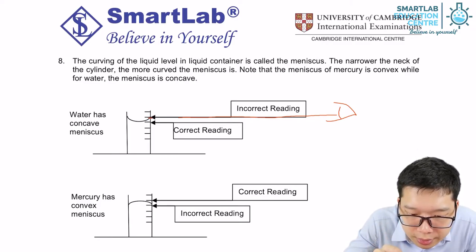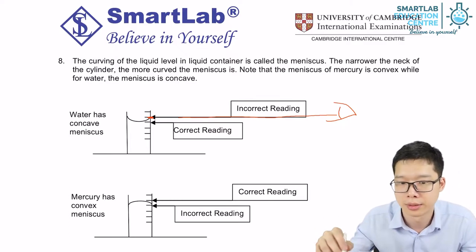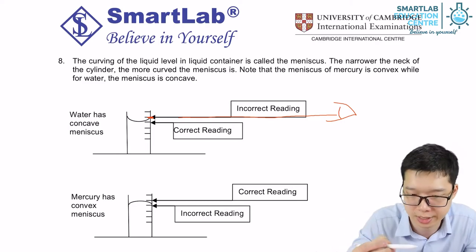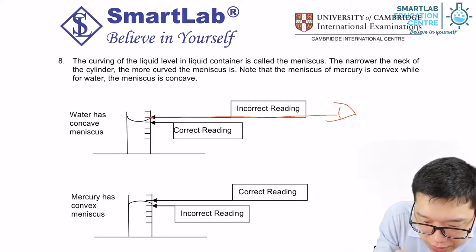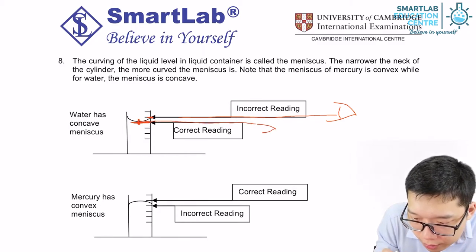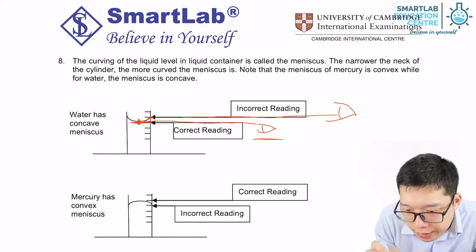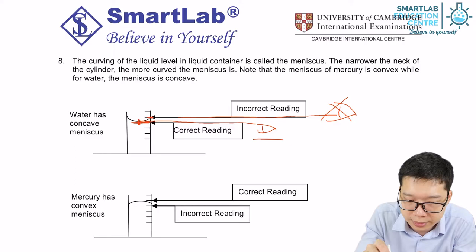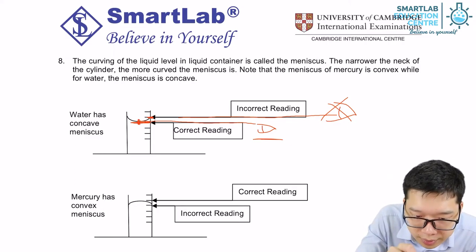Instead of reading at the direct contact point of the liquid and the measuring cylinder, we must read over here — the concave, the bottom of the concave. So that is the position our eye is supposed to be — not here, but here. For concave, it must be the bottom of the concave.